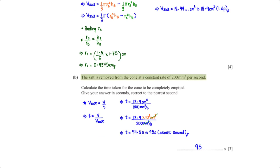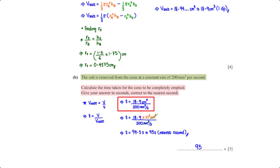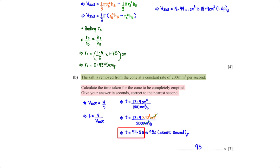The salt is removed from the cone at a constant rate of 200 mm³ per second. Calculate the time taken for the cone to be completely emptied, giving your answer in seconds to the nearest second. Time equals volume of salt divided by rate. Converting 18.9 cm³ to mm³ by multiplying by 1000, then dividing by 200, we get 94.5 seconds, which is approximately 95 seconds to the nearest second.